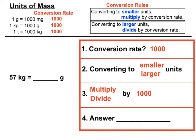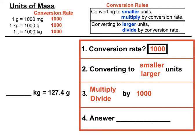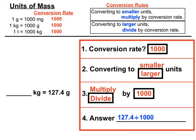Going from kilograms to grams: the conversion rate is a thousand. We're moving to smaller units — grams are smaller than kilograms — so we will be multiplying by a thousand, and 57 times a thousand is 57,000. Going from grams to kilograms: the conversion rate is a thousand, kilograms are larger, so we're converting to larger units and will divide by a thousand. Moving the decimal point three spots to the left gives us 0.1274. It's worth double-checking these on your calculator just to make sure.